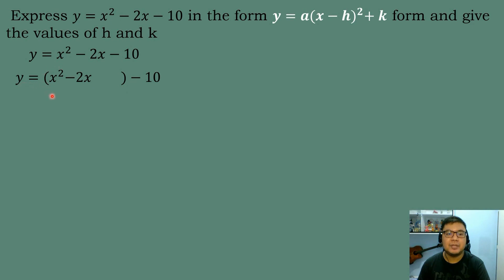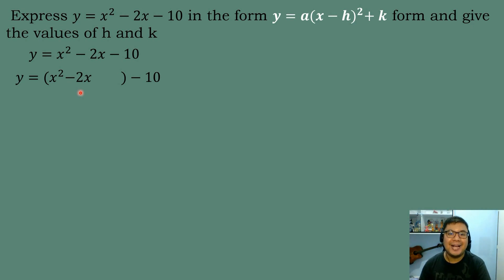So we have y = (x² − 2x) leaving a blank, then followed by minus 10. We will get the numerical coefficient of our linear term, which is negative 2, and then divide it by 2. Negative 2 divided by 2 equals negative 1. Then we square the answer: negative 1 times negative 1 equals positive 1.